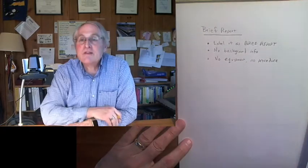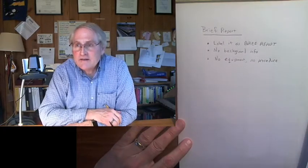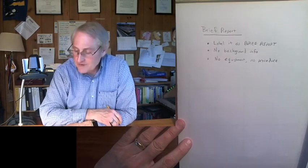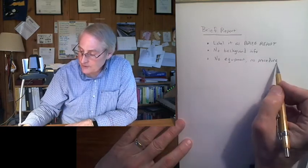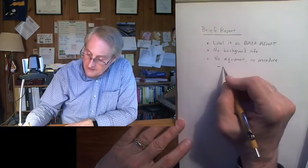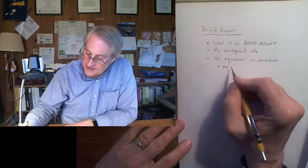No equipment and no procedure. Because those are given, the lab handout doesn't list the equipment, but it describes the equipment that you use in the method of operation. And it also tells you the procedure. So you don't need to repeat that unless there are deviations.